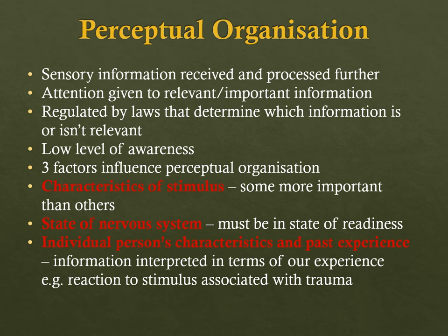Once sensory information has been received, it is processed further so that attention is given to relevant or important information rather than irrelevant or less important information. This process is called perceptual organization. Three factors of perceptual organization include: the characteristics of the stimulus, the state of the nervous system — which must be in a state of readiness to perceive information — and the individual's personal characteristics and past experience.